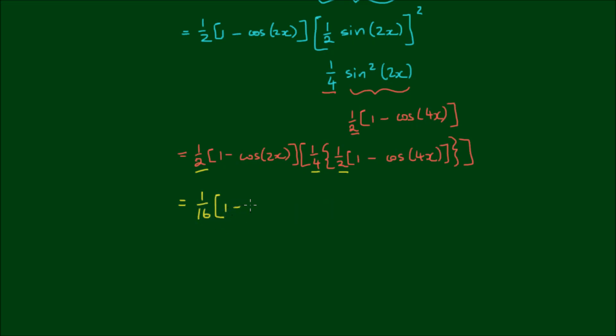And we simply have 1 minus cos of 2x by 1 minus cos of 4x. So expanding this out, we have 1 on 16 of 1 minus cos of 4x minus cos of 2x plus cos of 2x by cos of 4x.